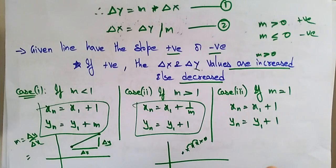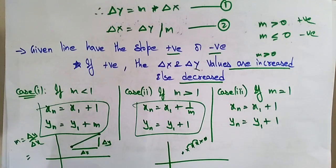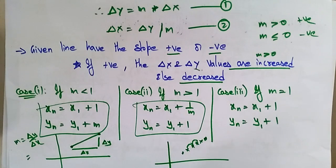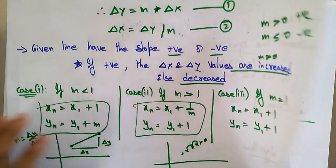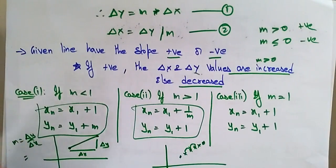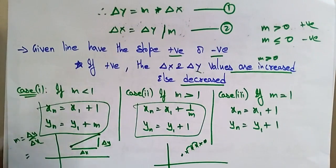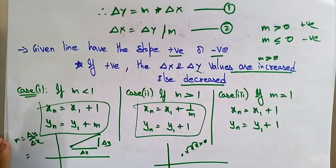To draw a line segment from the starting point to the end point, you need to find the intermediate points. With the help of those intermediate points, the line will be connected point to point. This was just the introduction part — in the next video I'll explain the algorithm. Thank you.